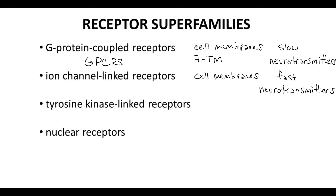The third superfamily is the tyrosine kinase-linked receptors, or TLKRs. TLKRs are membrane-bound. Tyrosine kinase-linked receptors bind to ligands, and then the receptors bind to each other to form dimers. As the dimer pair, the receptors become active and communicate a signal across the cell membrane. TLKRs are often growth factors and are targeted by cancer drugs.